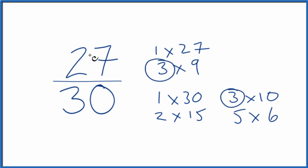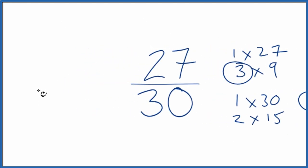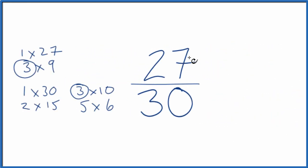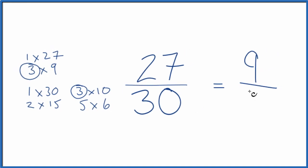So we're going to divide 27 by 3 and 30 by 3. Let's move these over here. So 27 divided by 3, that gives us 9. And 30 divided by 3 gives us 10.